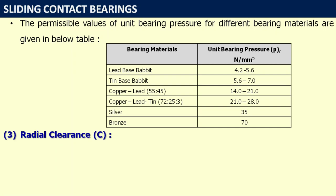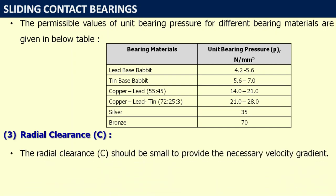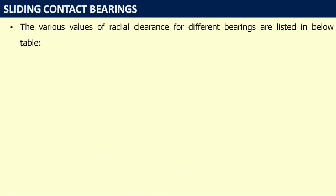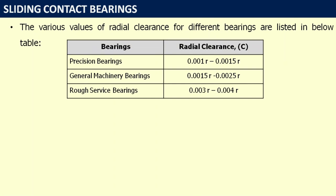The next parameter is radial clearance C. The radial clearance should be small to provide the necessary velocity gradient. Increasing radial clearance decreases load-carrying capacity and increases oil flow rate. Permissible values: for precision bearings, radial clearance ranges from 0.001R to 0.0015R; for general machinery bearings, from 0.0015R to 0.0025R, where R is the shaft radius.